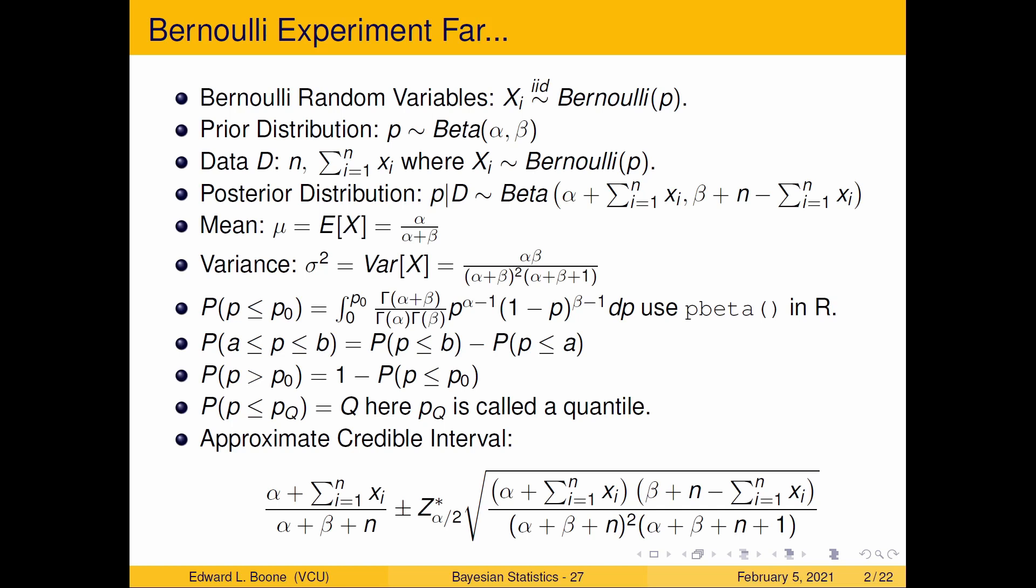Here we have a bunch of information. Quick rundown: all the variables are iid Bernoulli p. We're going to use a prior distribution that's beta alpha beta because it's actually what's called a conjugate prior. We'll talk about that more in a later video. We're going to have some data which is the number of trials and the sum of the xi where we're just adding up the number of successes. This gives us the posterior distribution of beta alpha plus the sum of the xi and beta plus n minus the sum of the xi.